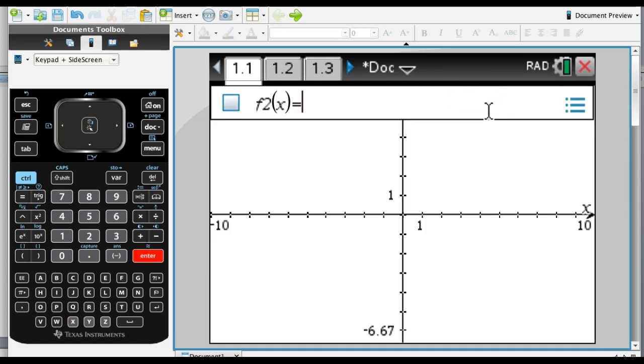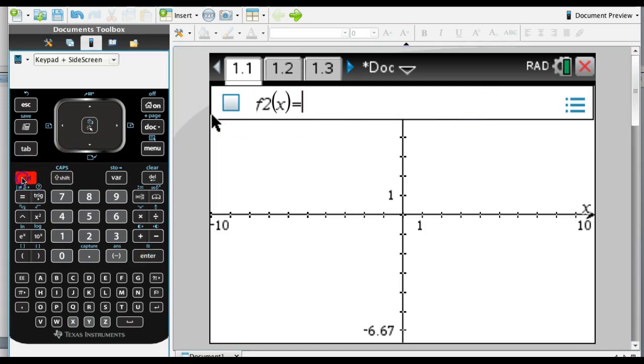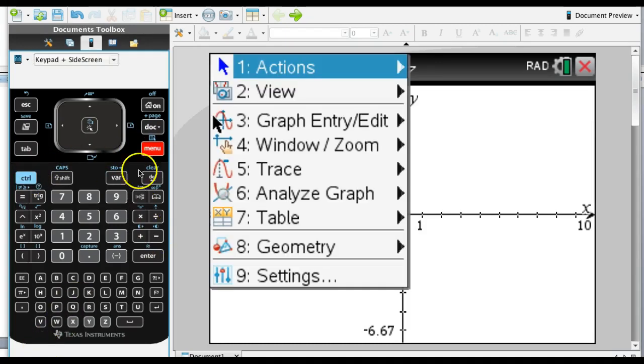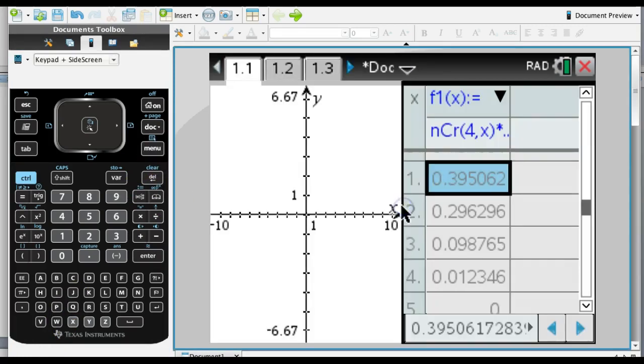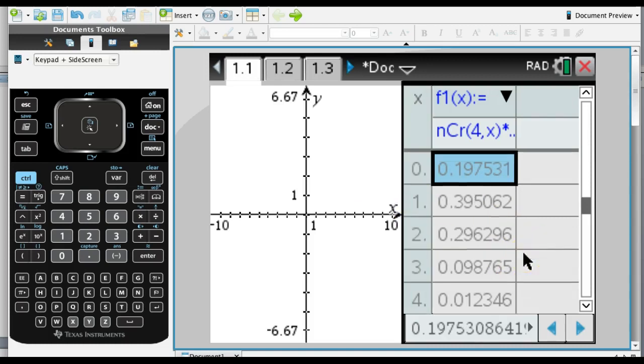Now, if you hit enter on that, nothing shows up. However, the table of values is what you really want here. So you can go control T. I did this wrong, sorry. Menu table. And so if I do the table, I want the split screen table.